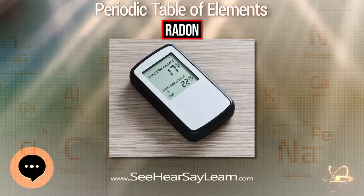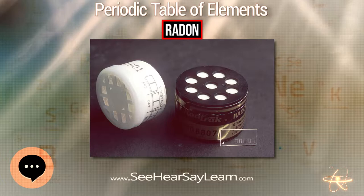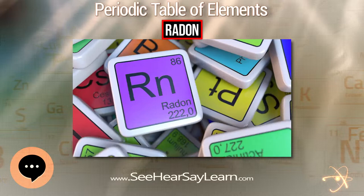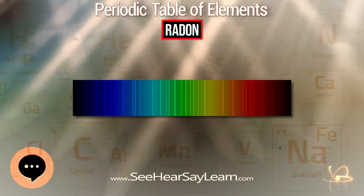About 2,900 of these deaths occur among people who have never smoked. While radon is the second most frequent cause of lung cancer overall, it is the number one cause among non-smokers according to EPA estimates. As radon itself decays, it produces decay products which are other radioactive elements called radon daughters. Unlike the gaseous radon itself, radon daughters are solids and stick to surfaces such as dust particles in the air. If such contaminated dust is inhaled, these particles can also cause lung cancer.